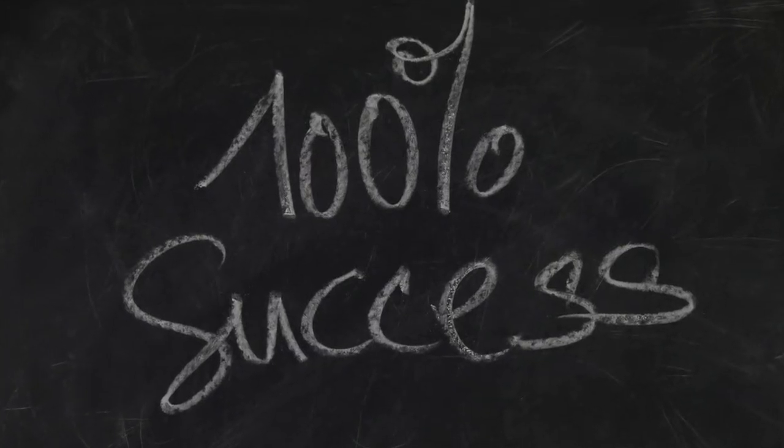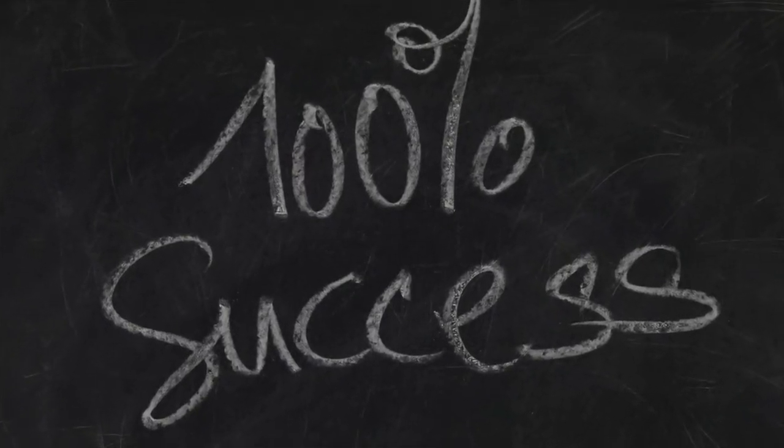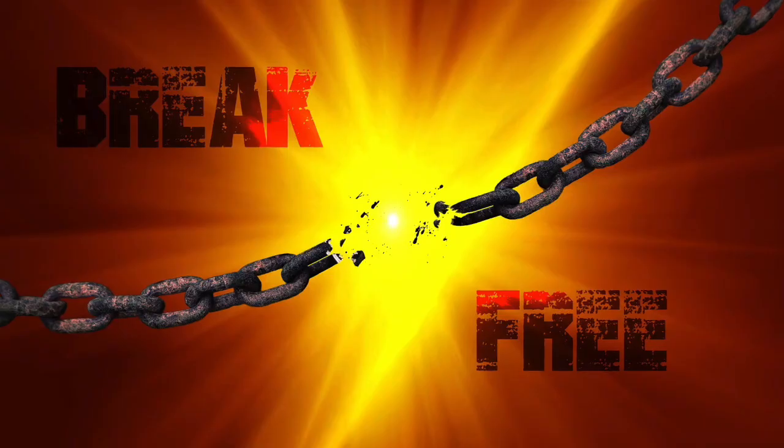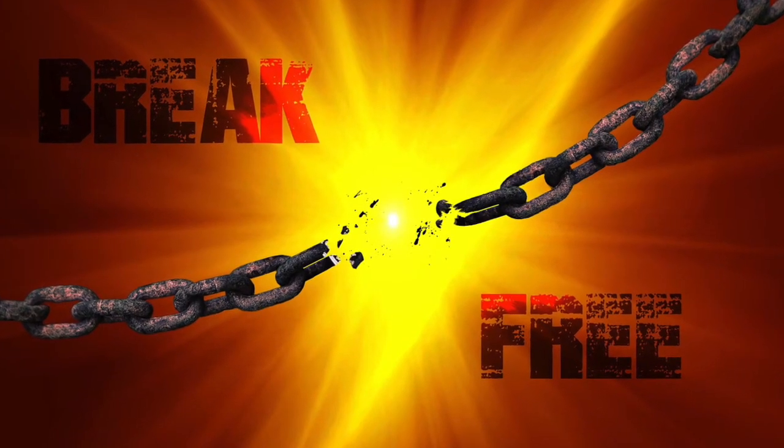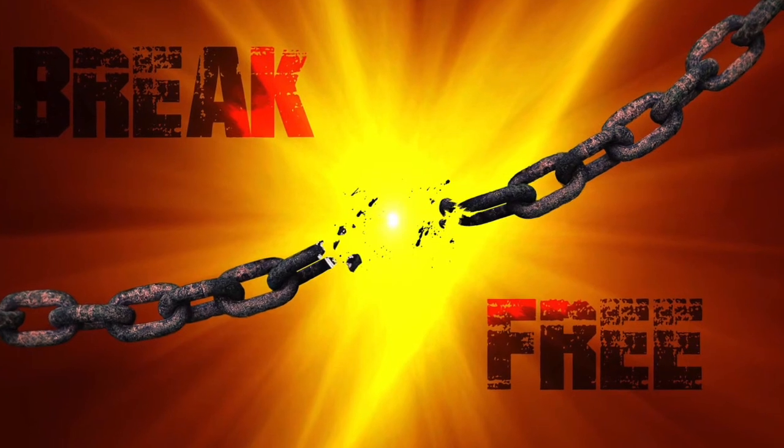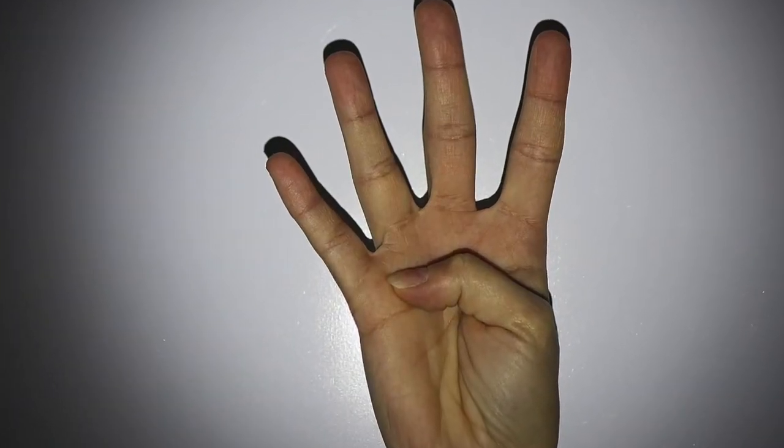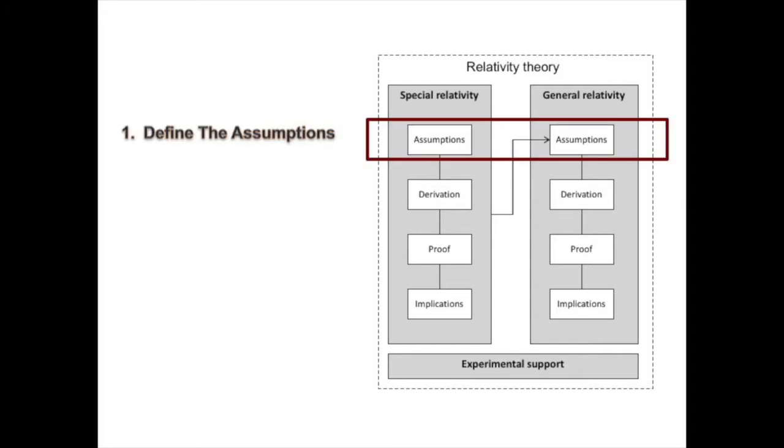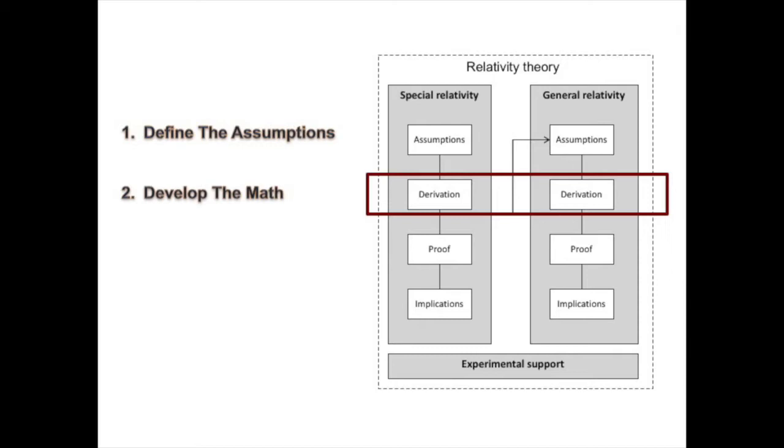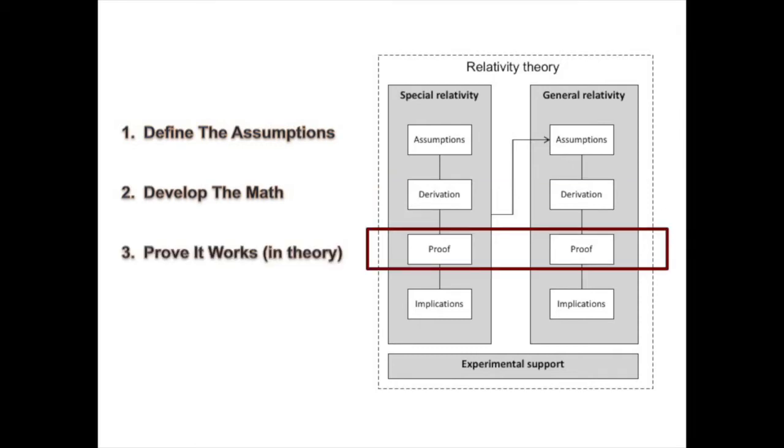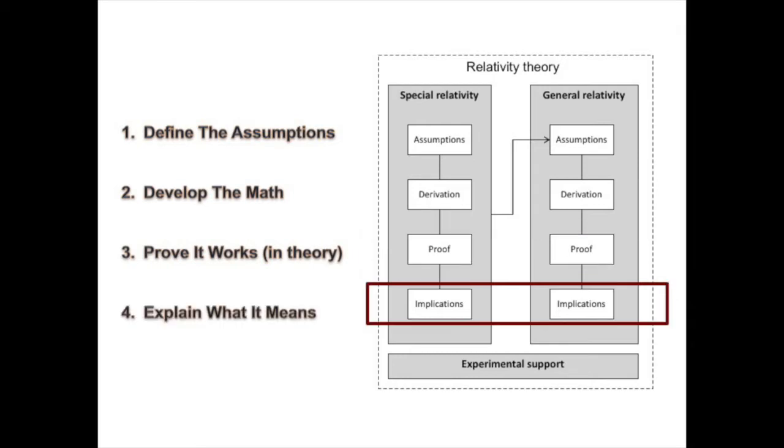To begin, we have to understand what makes a theory successful and what does it take to overcome a theory. First, to make a successful theory requires four steps: beginning with your assumptions, followed by a mathematical derivation of your work, the third step is to prove that your math and your assumptions are valid and compatible with each other, and the fourth step is to discuss any implications or interpretations based on your discovery.